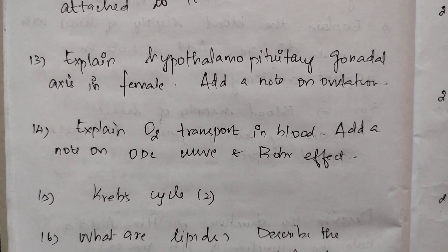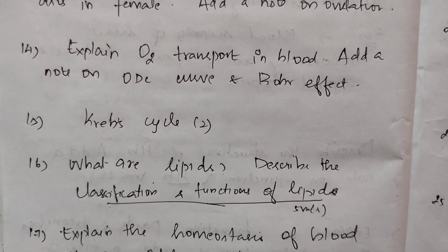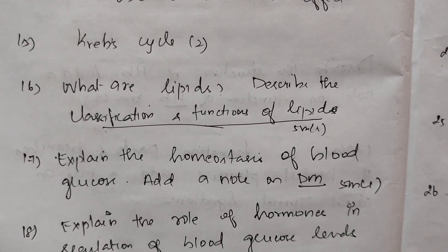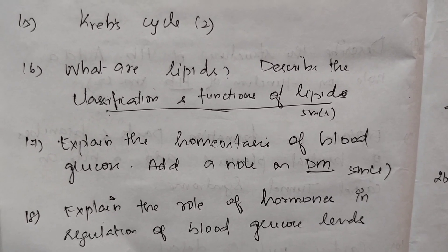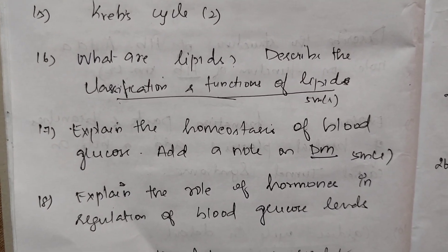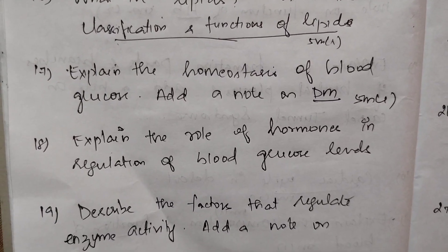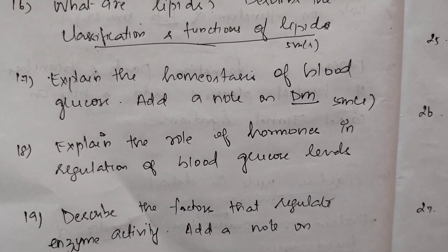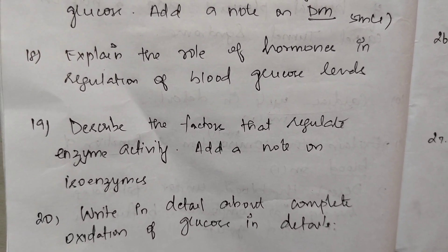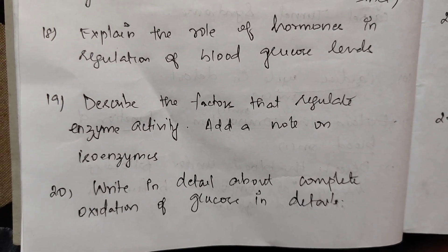Explain the hypothalamo-pituitary-gonadal axis in females and add a note on ovulation. Explain oxygen transport in blood and add a note on the ODC curve and Bohr's effect. Krebs cycle — 2 times. What are lipids? Describe the classification and function of lipids. For 5 marks: classification and functions of lipids. Explain the homeostasis of blood glucose and add a note on diabetes mellitus — diabetes mellitus also in 5 marks. Explain the role of hormones in regulation of blood glucose levels. Describe the factors that regulate enzyme activity and add a note on isoenzymes.